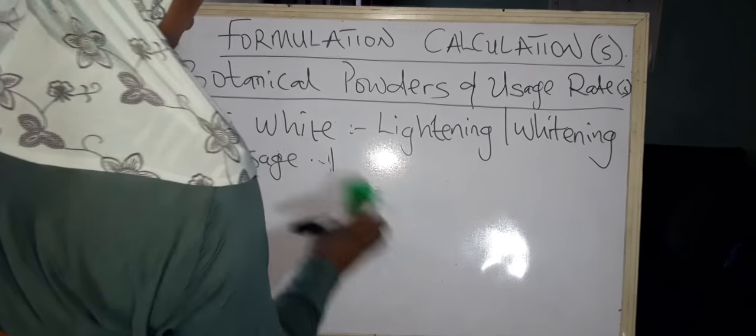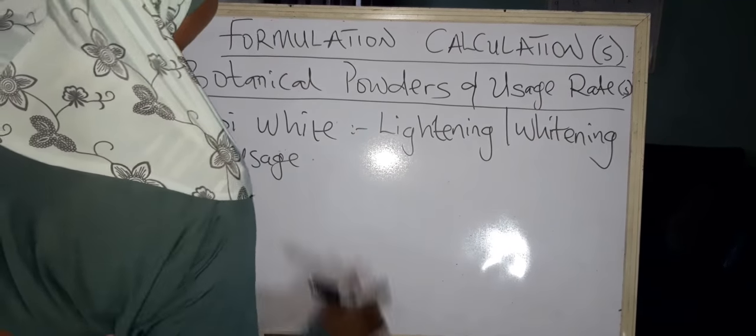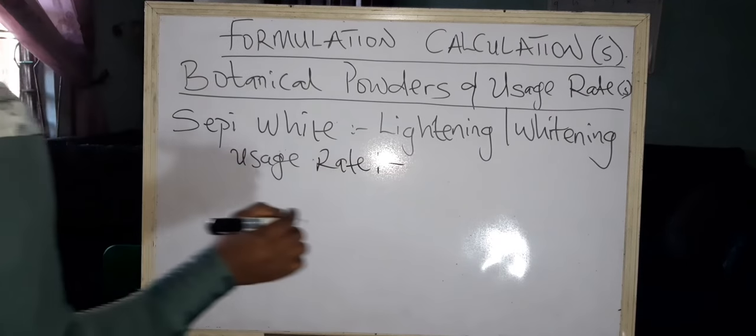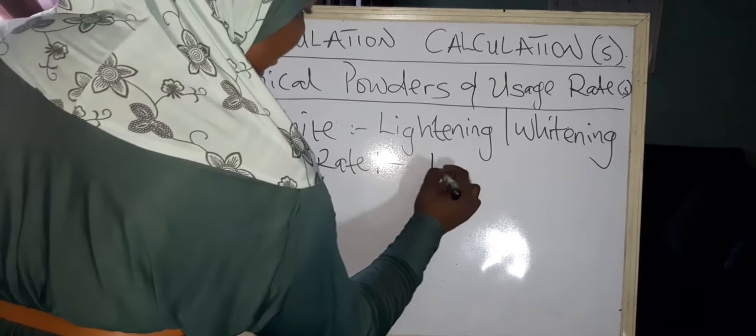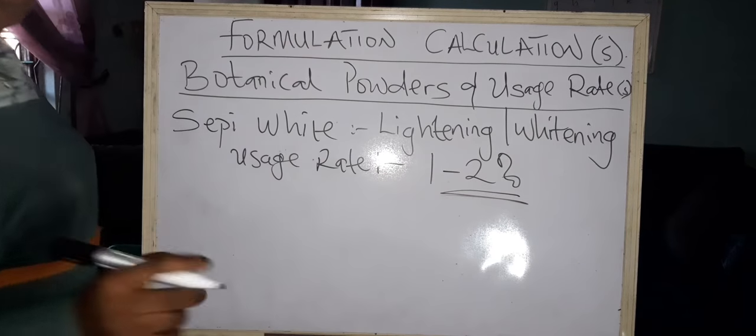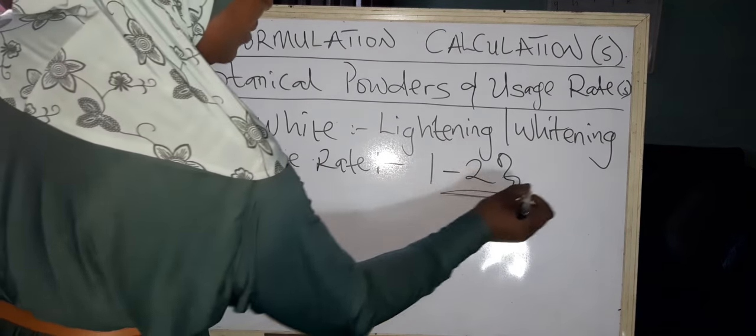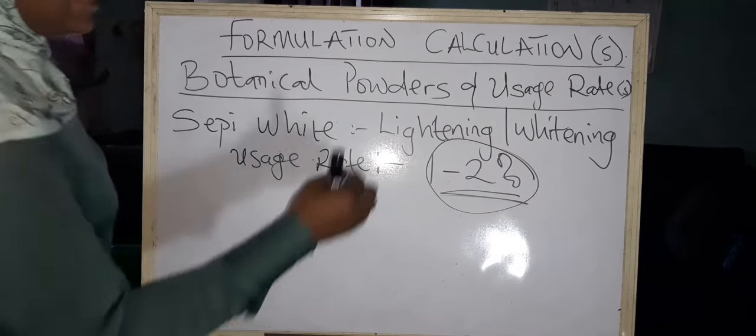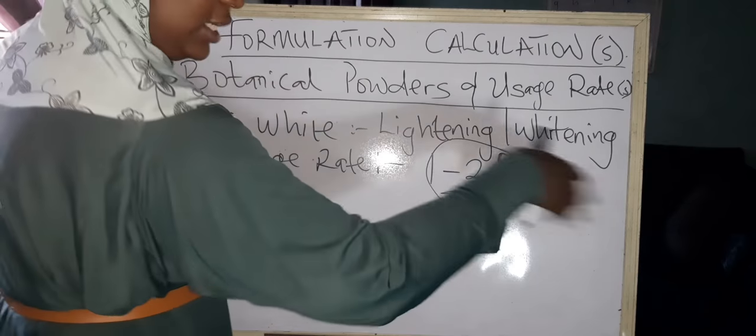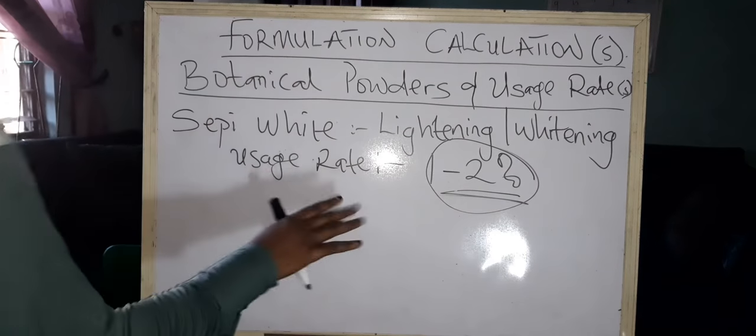The usage rate of Sepi White is about one to two percent. That is the usage rate. Most people have problems with this usage rate - they don't know how to calculate it to function in their products.